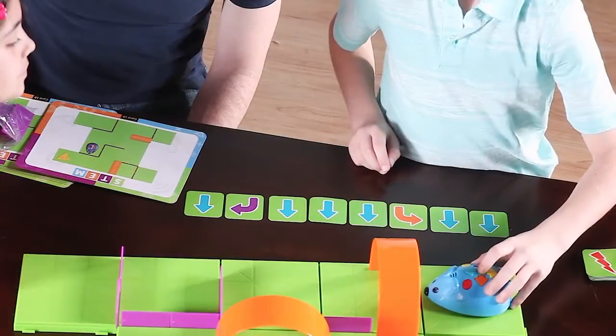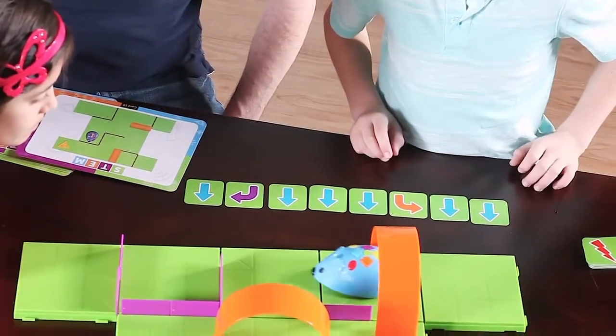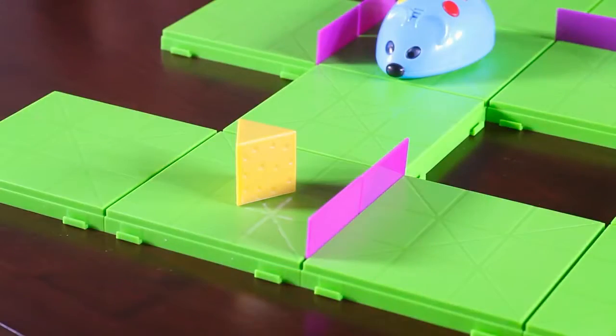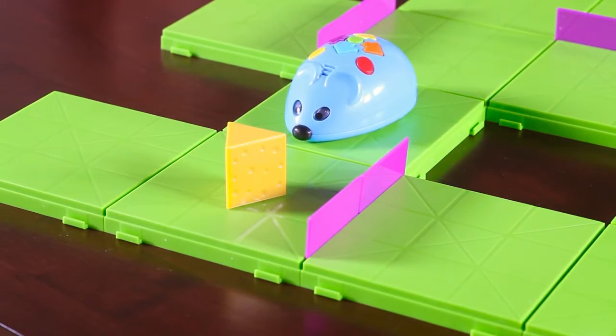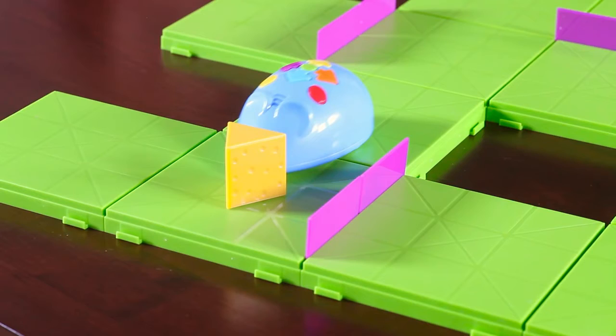Finally, enter the sequence of steps using the color-coded buttons. Press the green Start button and watch Colby race to find the cheese. If he doesn't quite make it, simply add the needed steps, reposition Colby, and press the green button to start again.